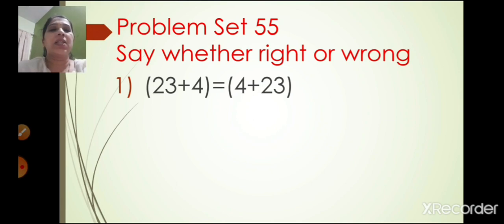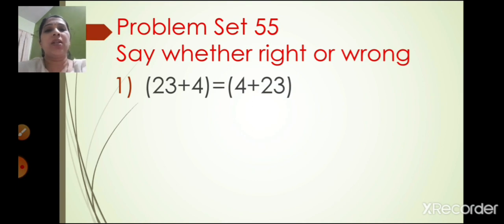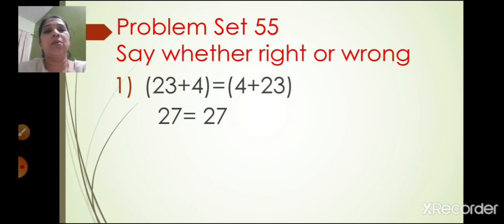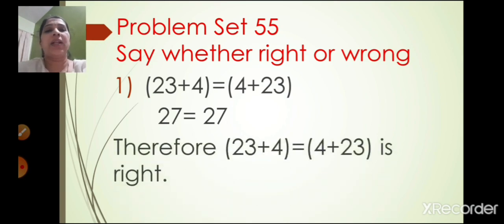The first question says: say whether right or wrong. Serial number 1 is 23 plus 4 is equal to 4 plus 23. Now 23 plus 4 is 27, and 4 plus 23 is also 27. So 27 is equal to 27. Therefore 23 plus 4 is equal to 4 plus 23 is right.